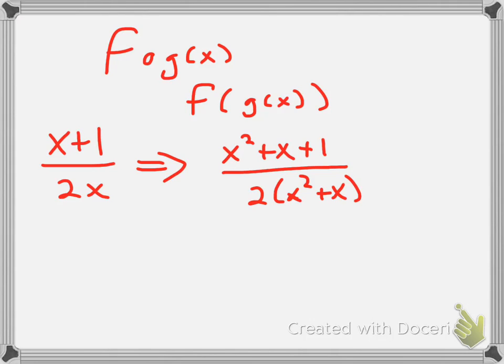And now I want to simplify as much as I can. So I can say x squared plus x plus 1. I'll distribute my 2 and get 2x squared plus 2x.